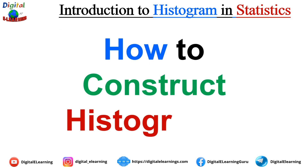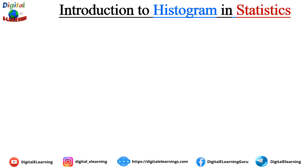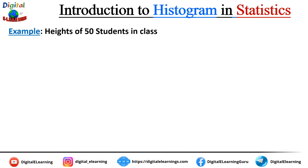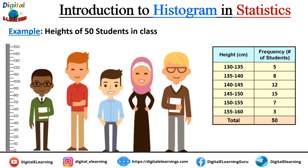Now let's see how to construct a histogram using a live example. Suppose we measure the height of 50 students in a class. We divide the height data into bins, each representing a particular range of height — for example, 130 to 135, 135 to 140, and so on up to 160. We count how many students fall in each range: 5 students in 130–135, 8 students in 135–140, and so on. The total frequency across all intervals is 50, since we measured 50 students.